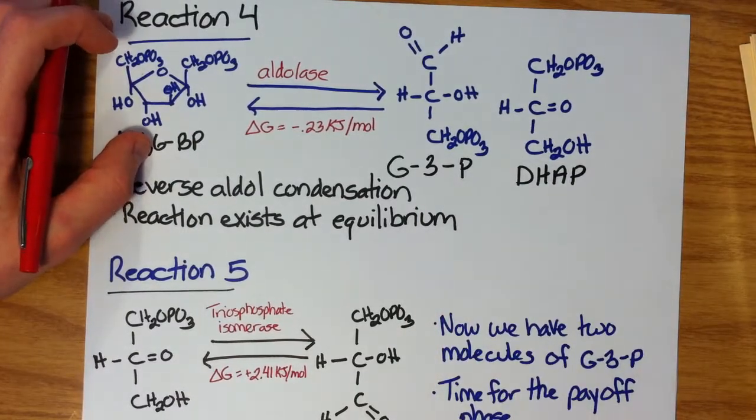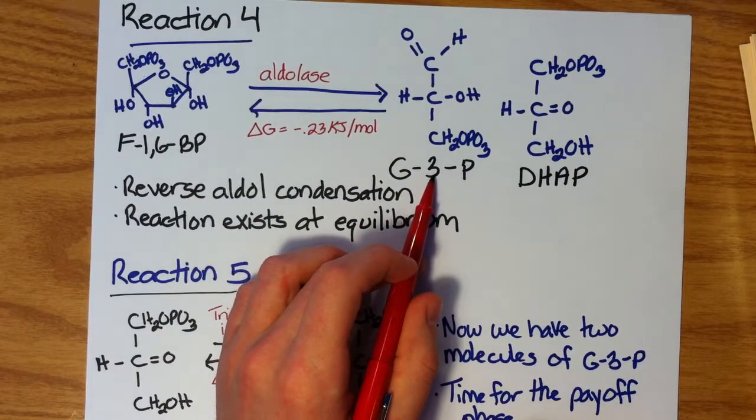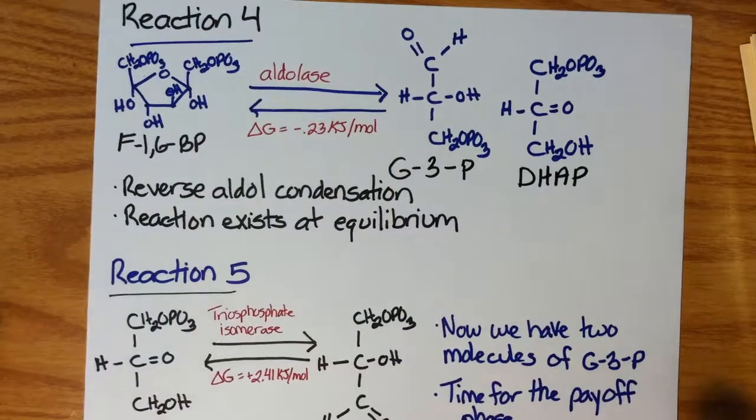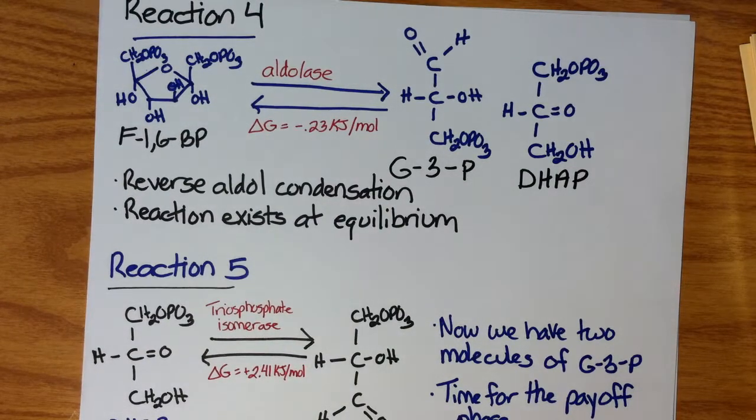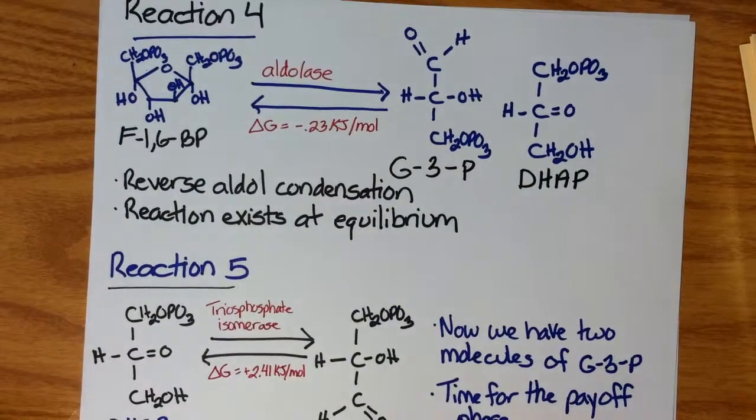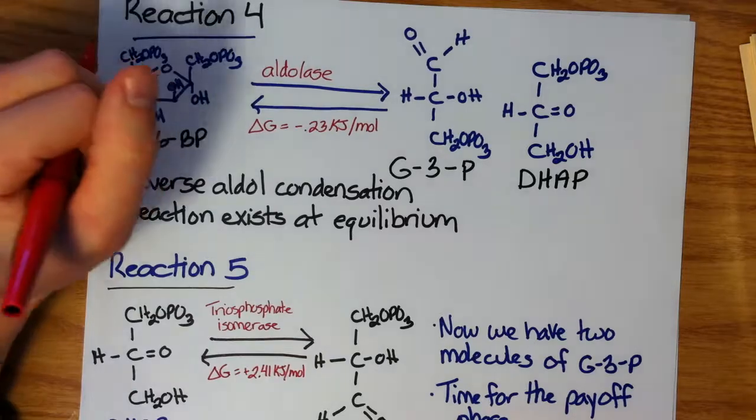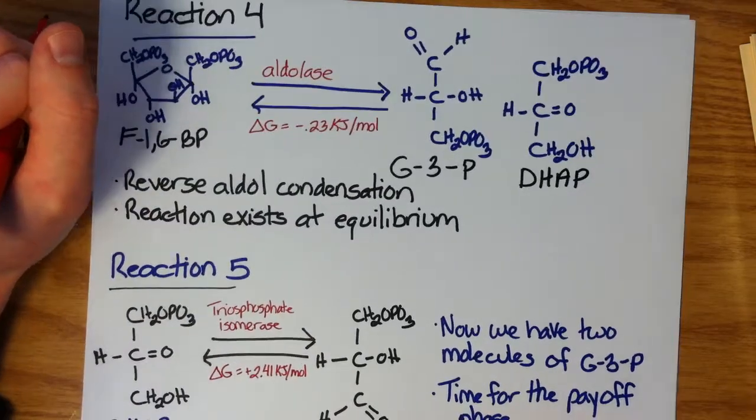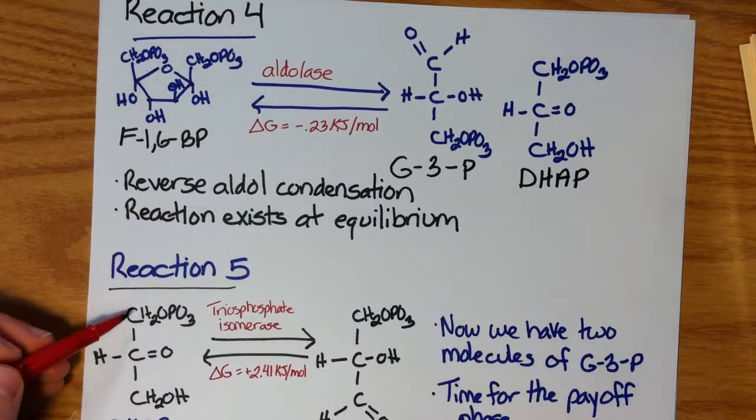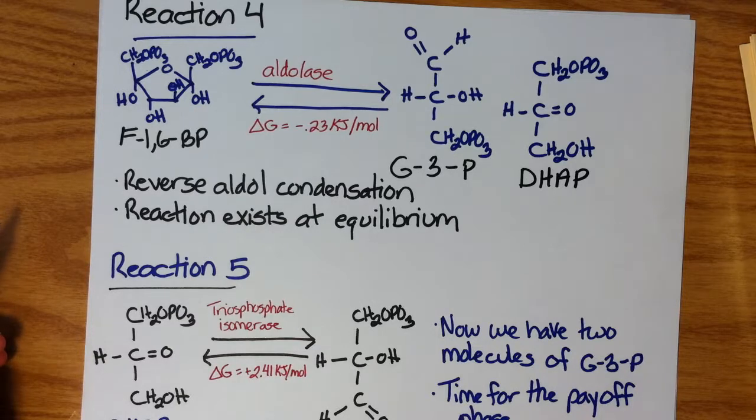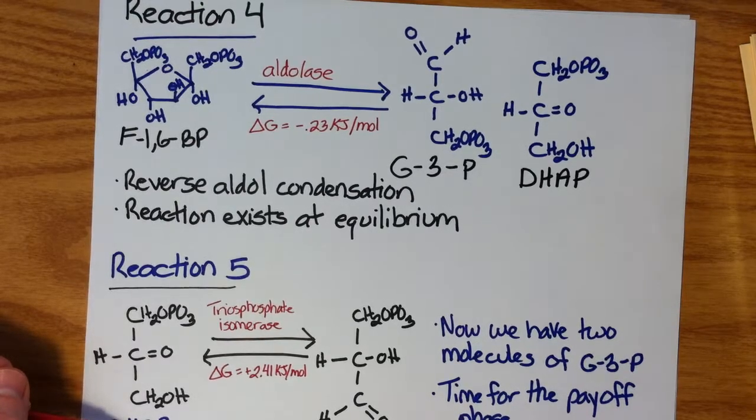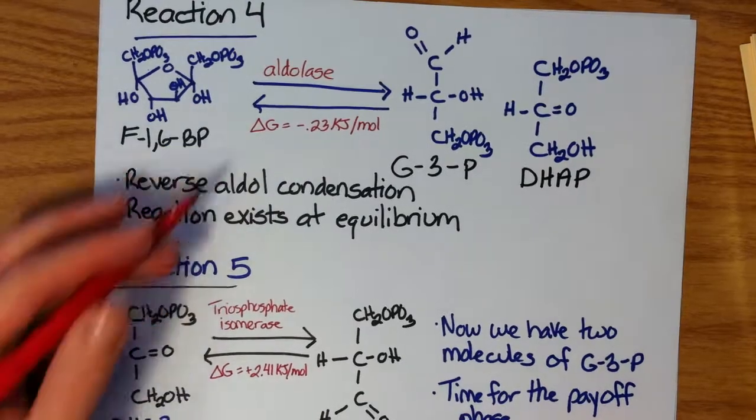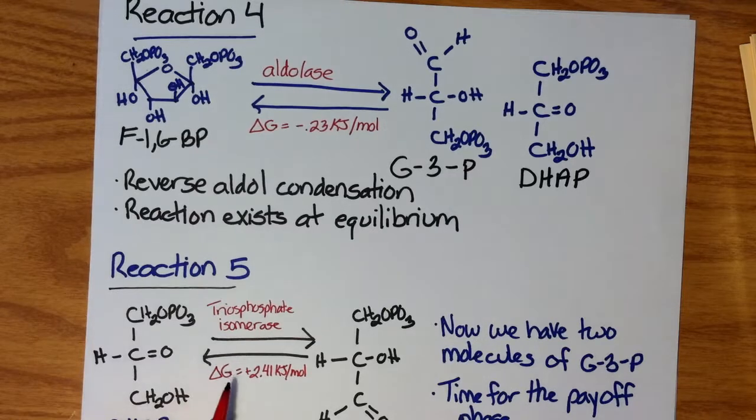So in order to be able to utilize both of these molecules to gain more energy in the second half of the reactions, we need to find a way to convert dihydroxyacetone phosphate into glyceraldehyde-3-phosphate. And that is, of course, exactly what our cells have been able to devise. And that's going to occur in the last reaction, reaction 5, of the investment phase. And that is the conversion of dihydroxyacetone phosphate into glyceraldehyde-3-phosphate by the enzyme triose phosphate isomerase. Its free energy change is relatively neutral, close to zero as well, positive 2.41 kilojoules per mole under physiological conditions.